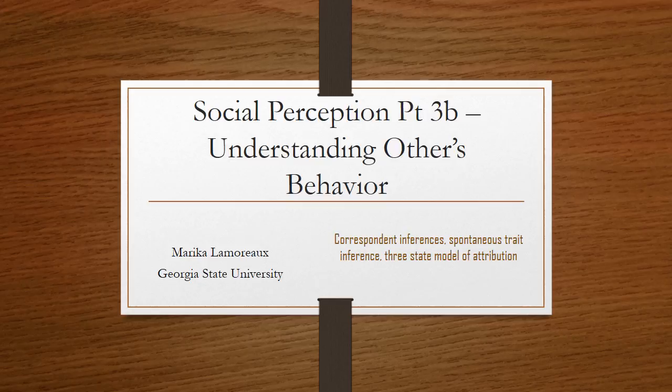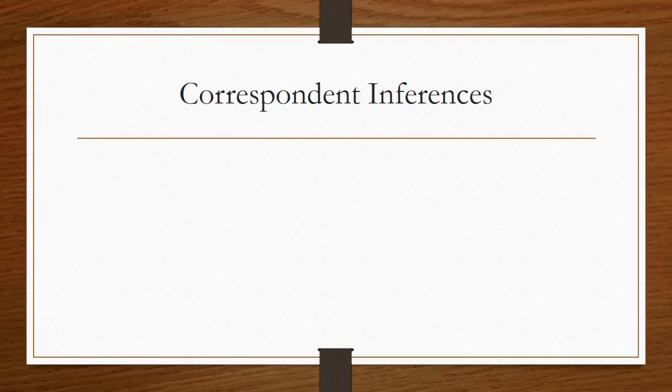Hi everyone and welcome to the last lecture on social perception. The first thing we'll talk about is correspondent inferences. Correspondent inferences is all about how we make judgments about other people's behavior — like all the topics in this lecture will be.